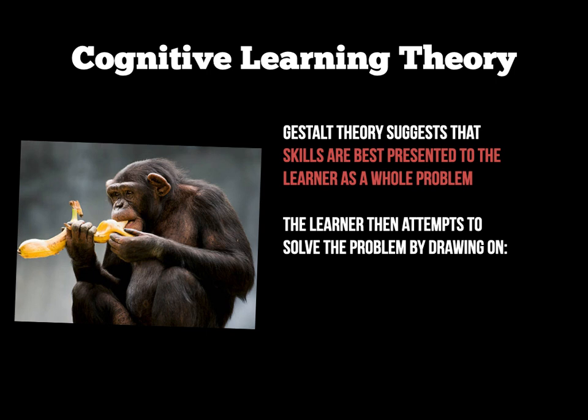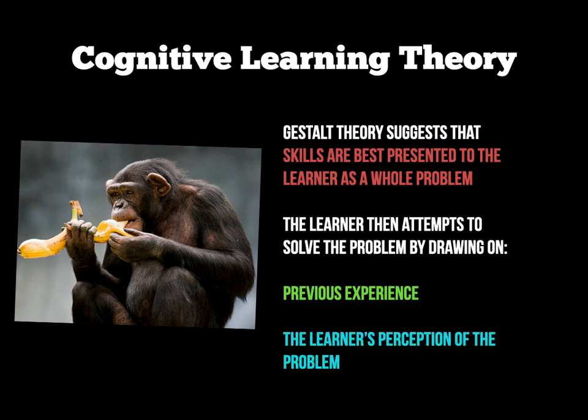The learner then thinks about the problem and tries to solve it. First, they might explore whether they have had any previous experience in any way, shape, or form relating to the problem. The next thing they must do is think about what needs to be done with the problem — we call that the perception of the problem. They are working out what needs to be done.